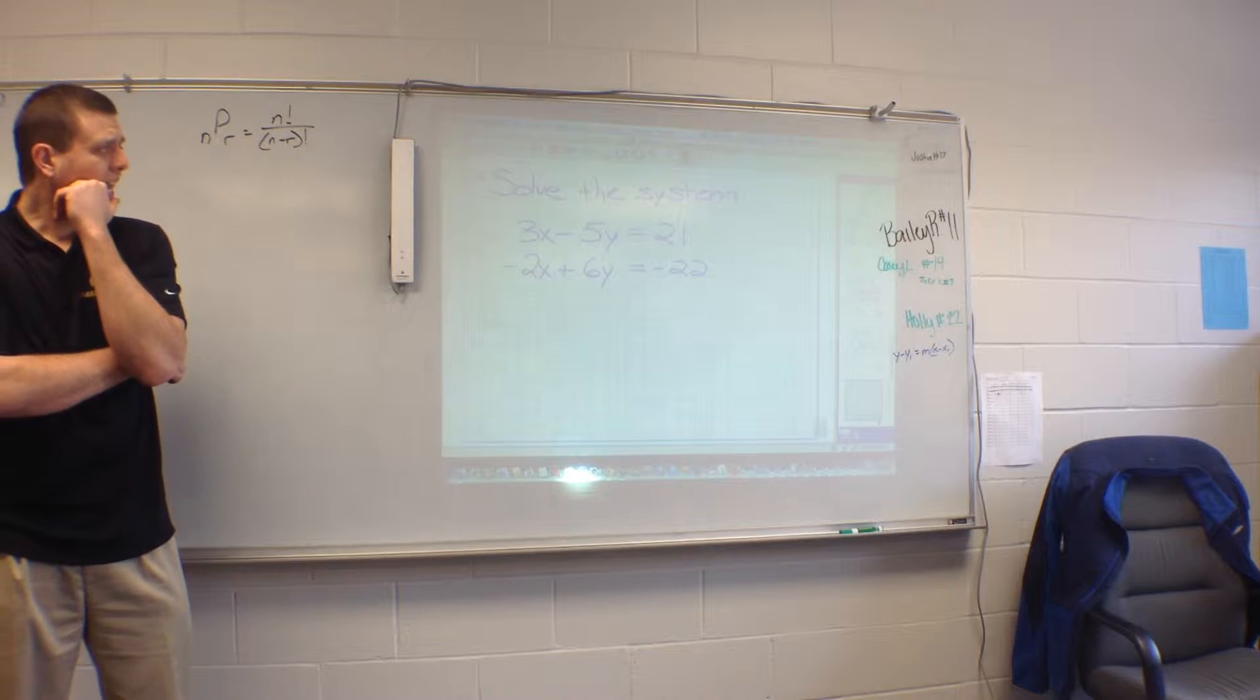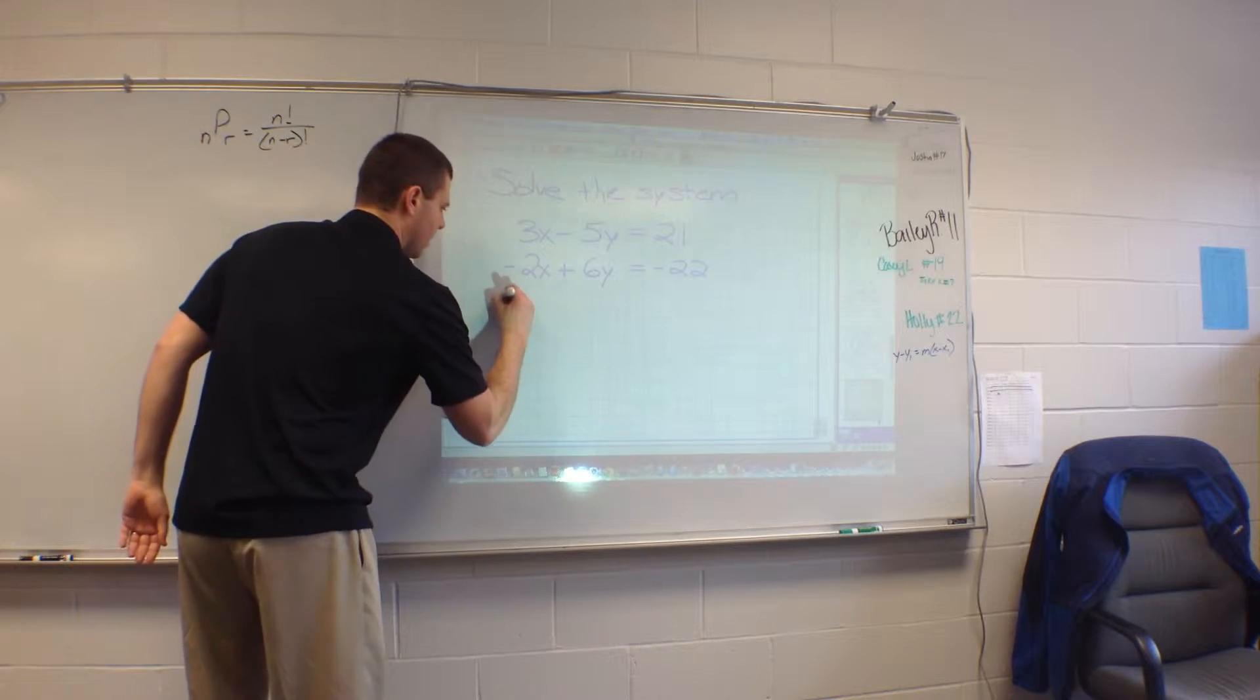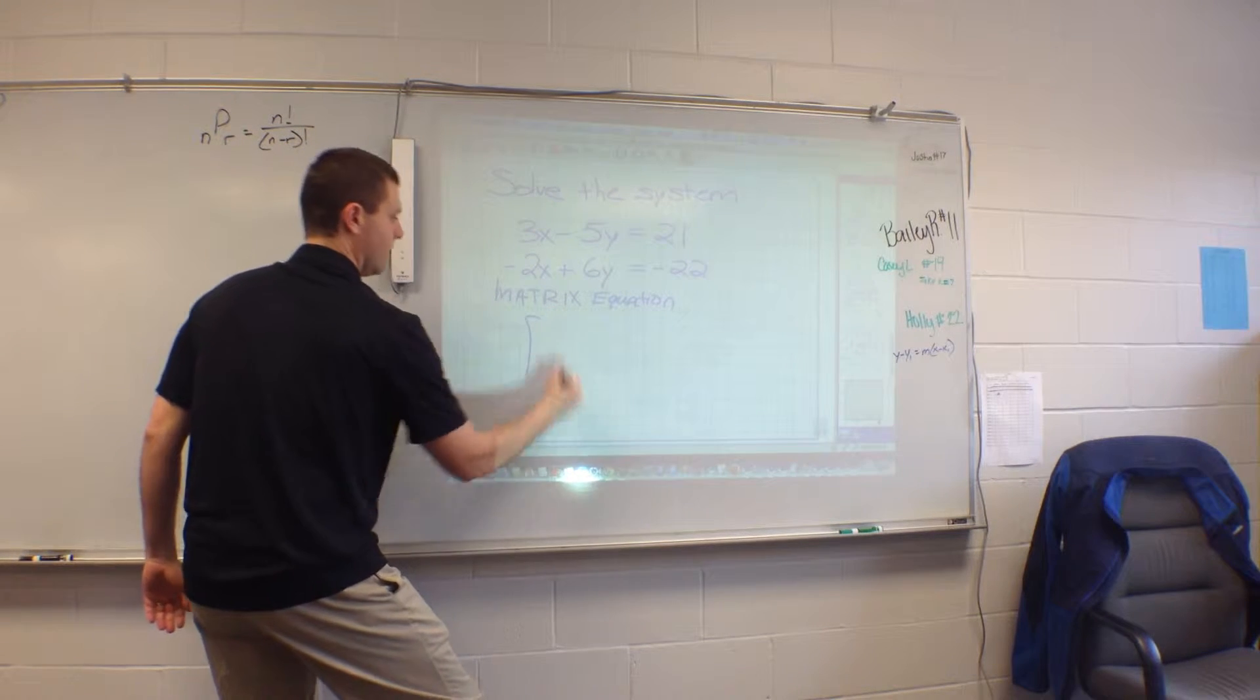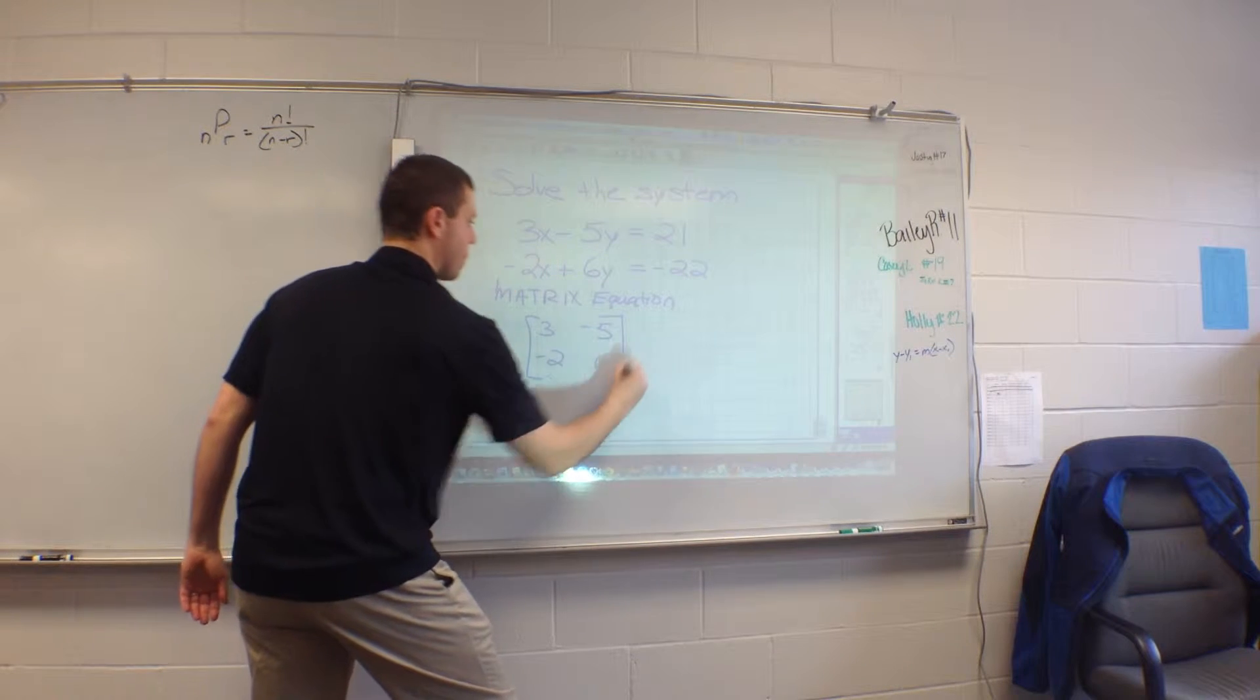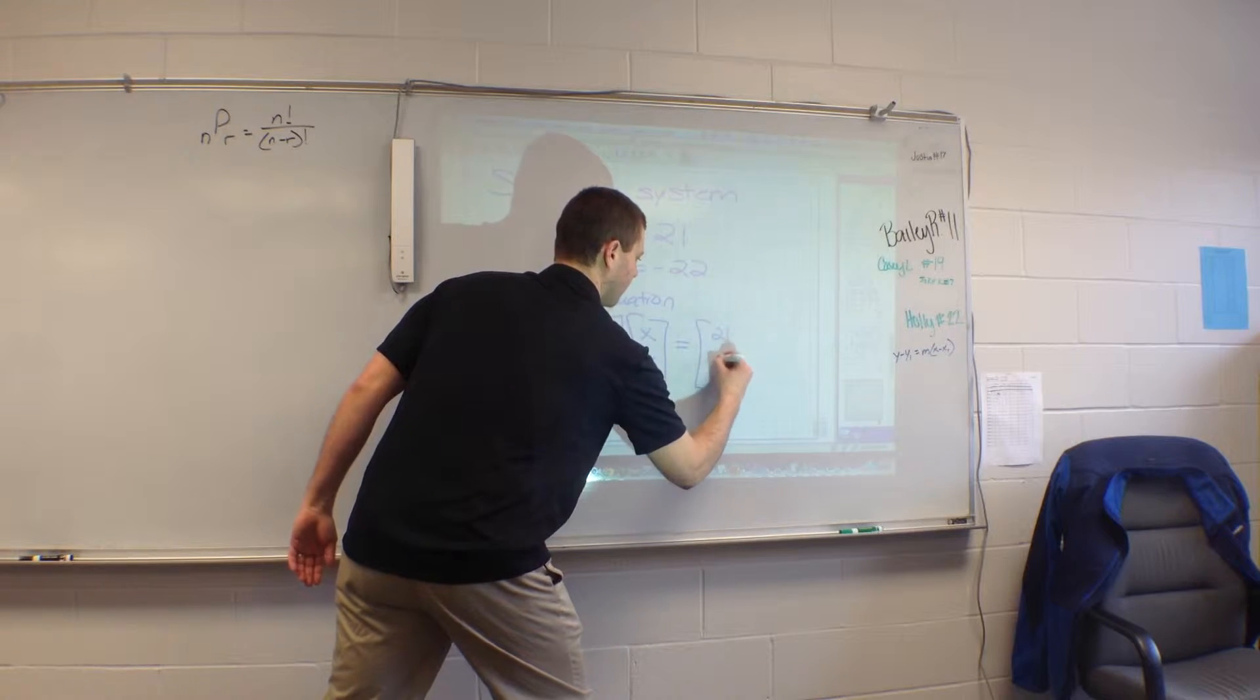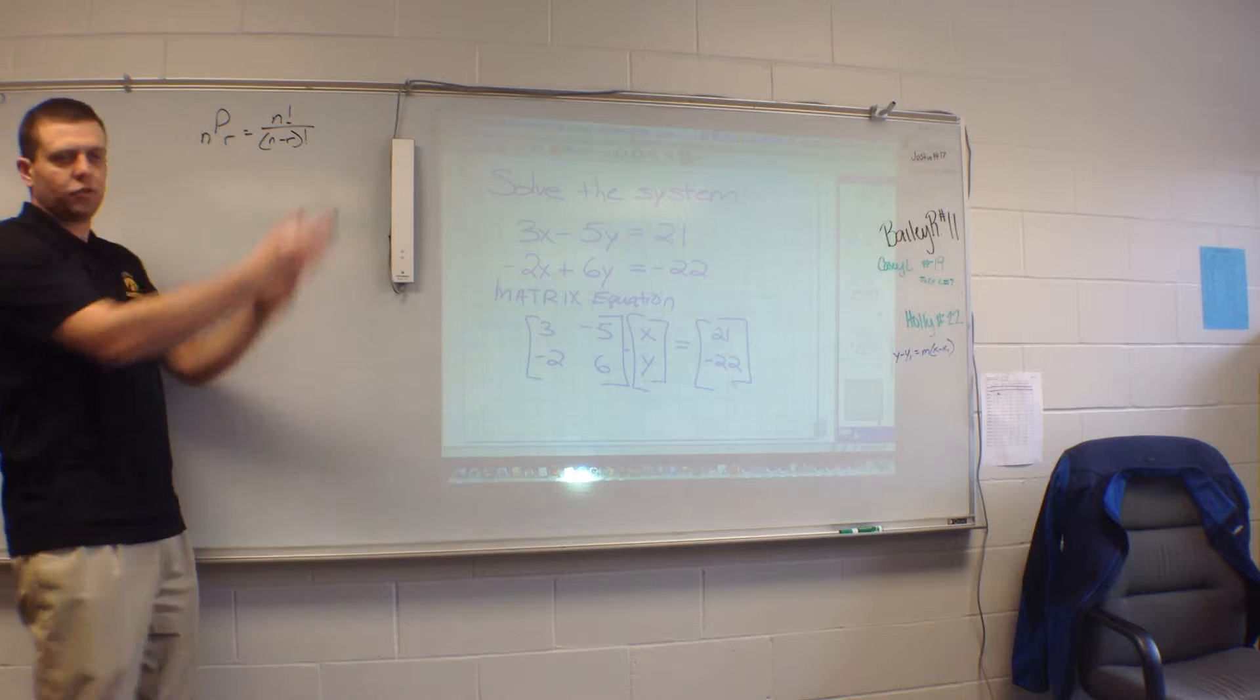So what I can do is change this way of writing the system into an actual matrix equation. I'm going to change it to a matrix equation. I'm going to put the coefficients in a little 2 by 2 matrix. I'm going to multiply that by the variables x, y in a 2 by 1 and set it equal to the constant. And let me show you how that is saying the exact same thing as what you see above it.